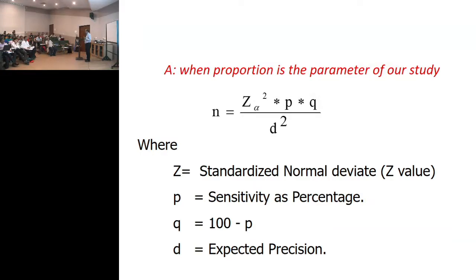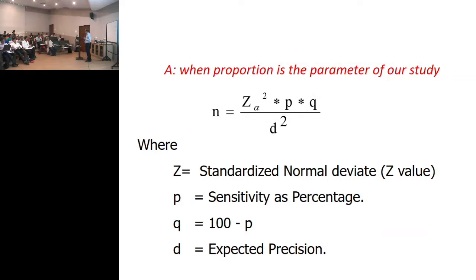Sensitivity means diseased. This tells you that you need to study 64 subjects who are diseased, like what we have been talking about in the case control method. So you have to study 64 diseased. And if you have a similar number of non-diseased, you need to say 64 non-diseased should also be studied. This is based on the case control method.